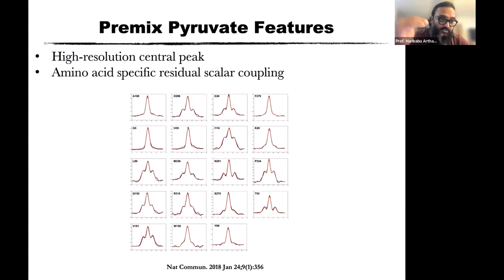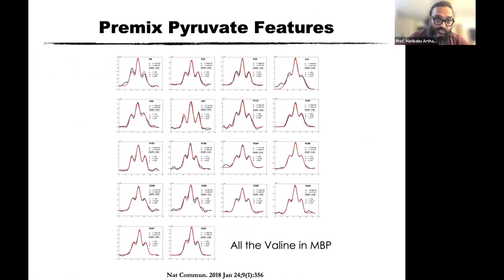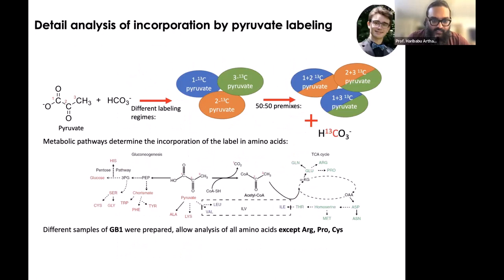The peak shape for different occurrences of the same amino acid in MBP — for example, valine — looks pretty similar across all occurrences, because it's a property of how that particular amino acid is biochemically derived. This is what makes the approach reliable.